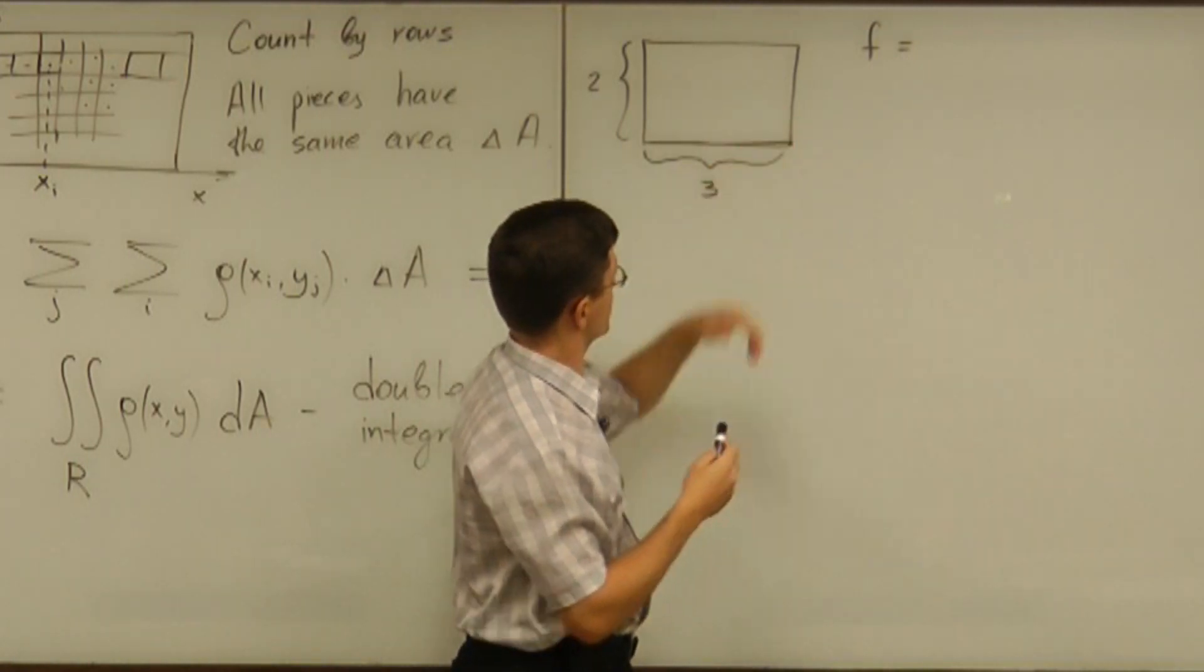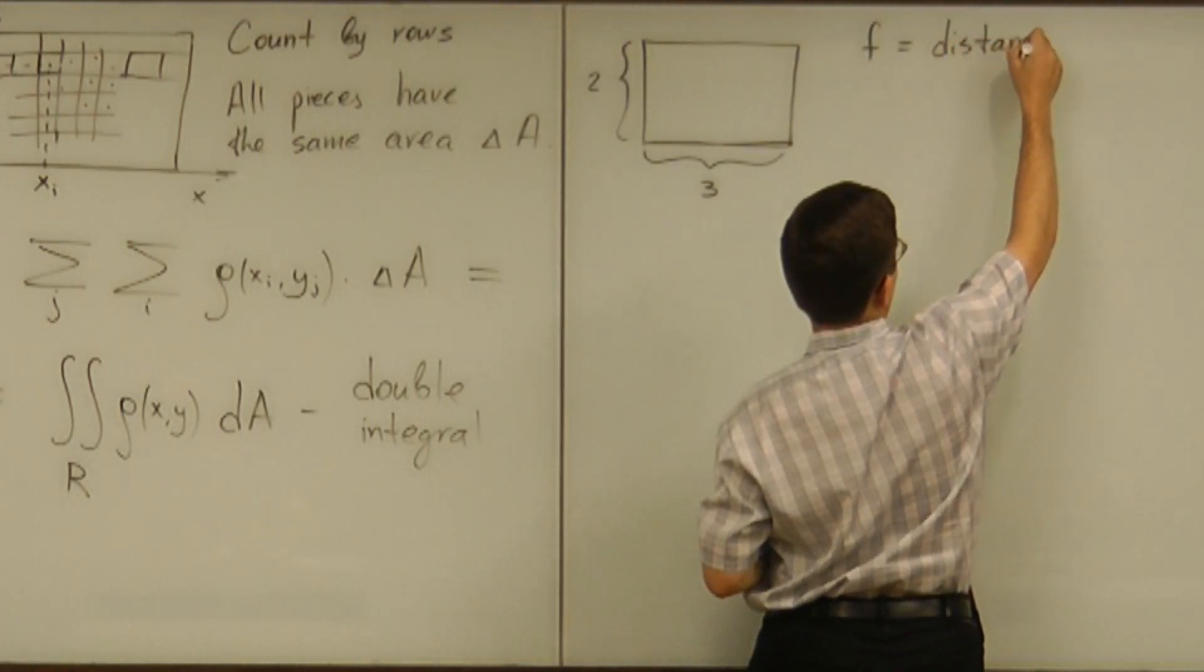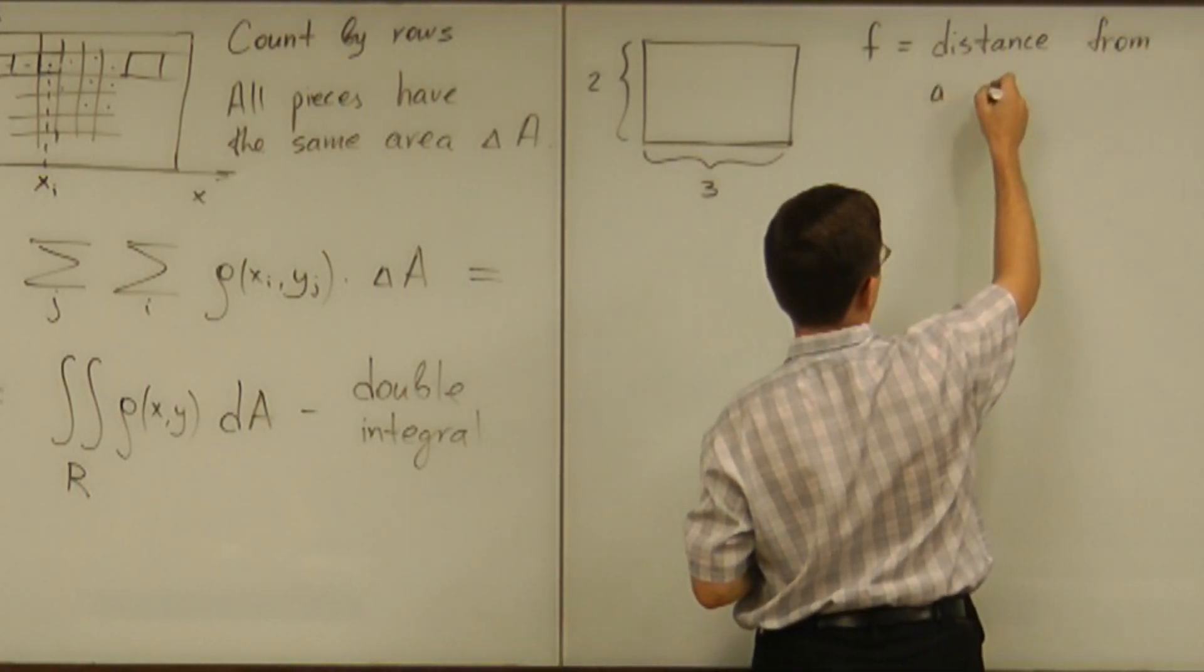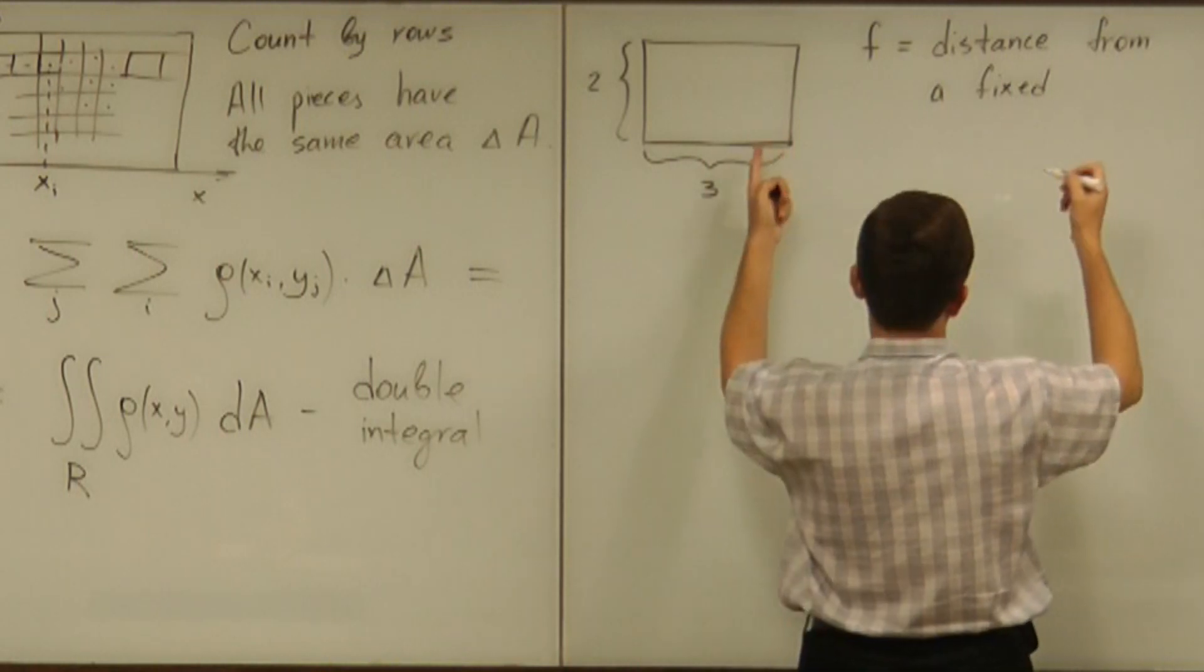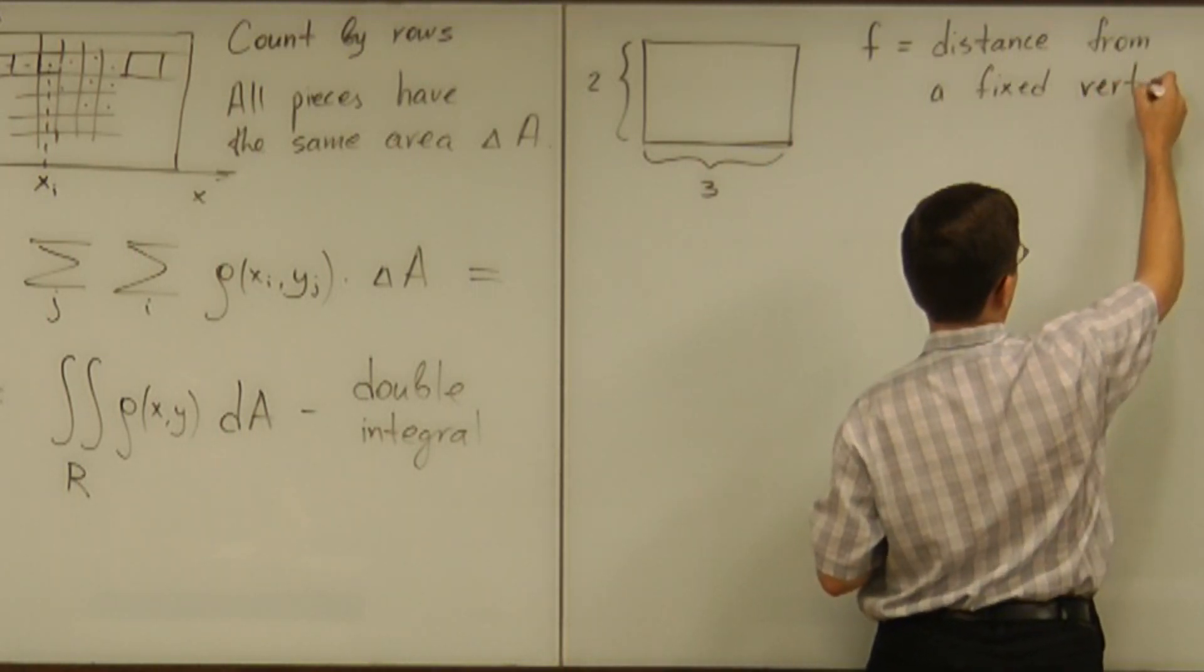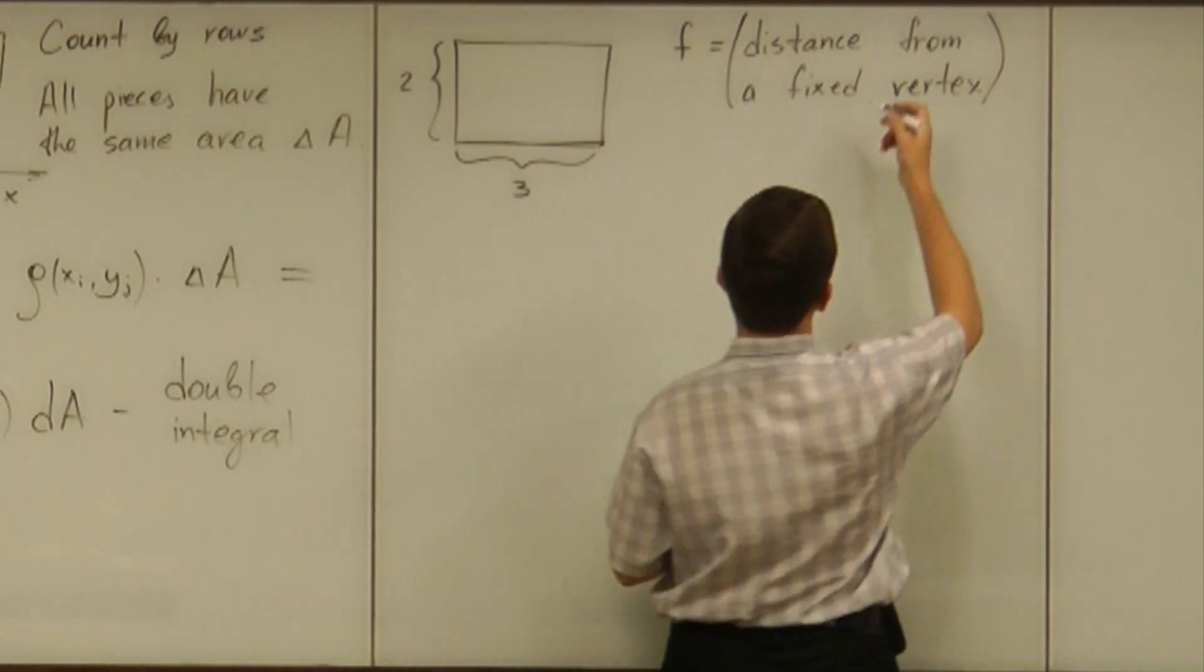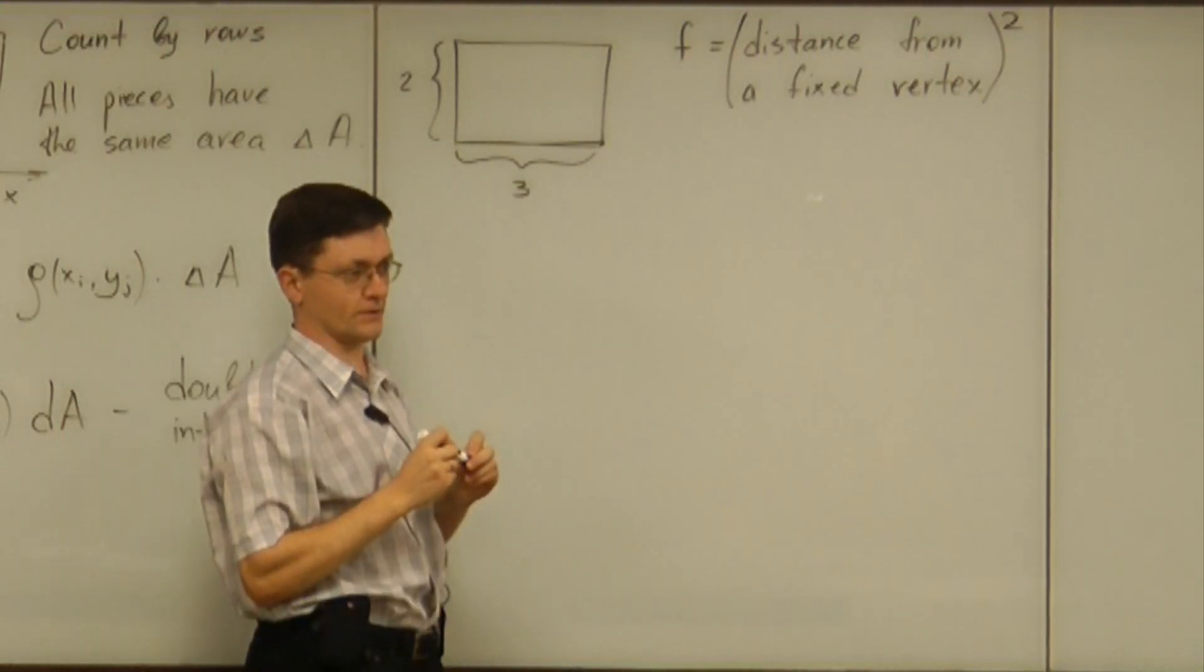And the function can be the distance from a fixed vertex, a fixed corner of this rectangle. And just to have simple integral I will choose that to be distance squared. That's my function.